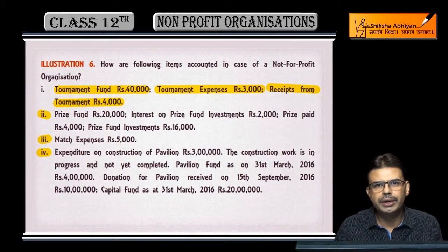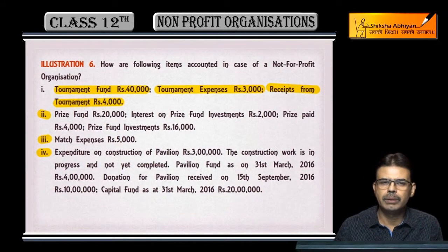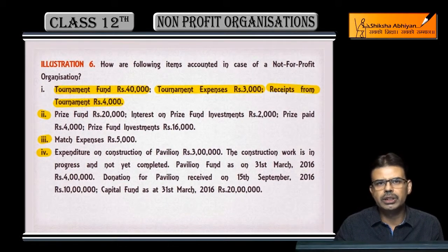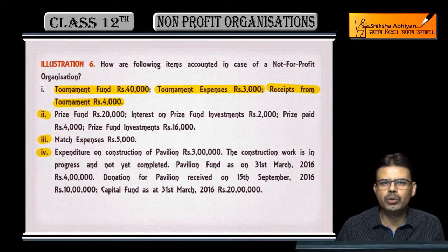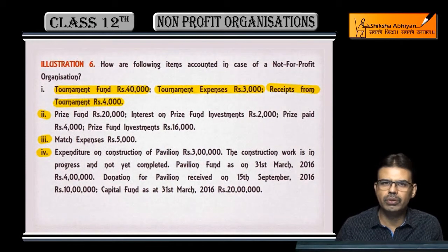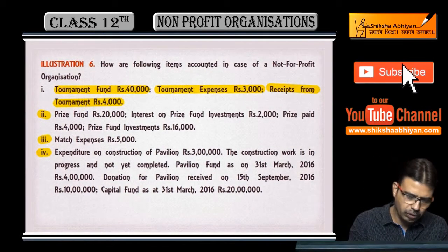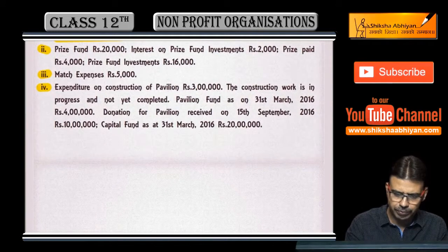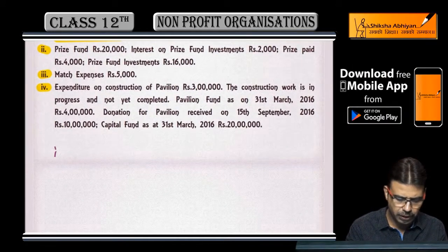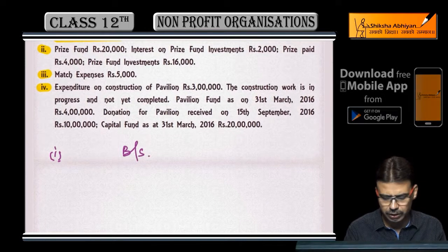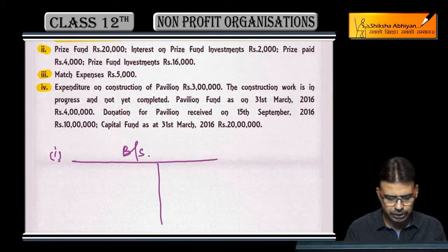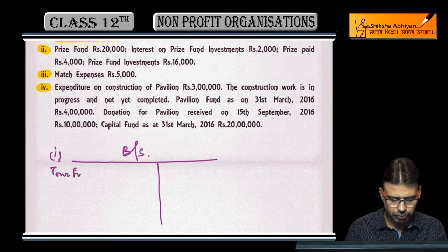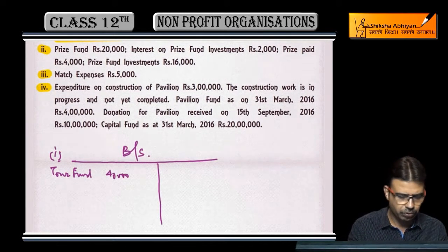Funds related jitni bhi items hain, sab balance sheet mein show karengi. General income ya general expenditure income and expenditure account mein show karengi, lekin specific cheezein jitni bhi hain — jaise tournament fund — iska balance sheet mein show karengi. Balance sheet ki liability side par: tournament fund 40,000.